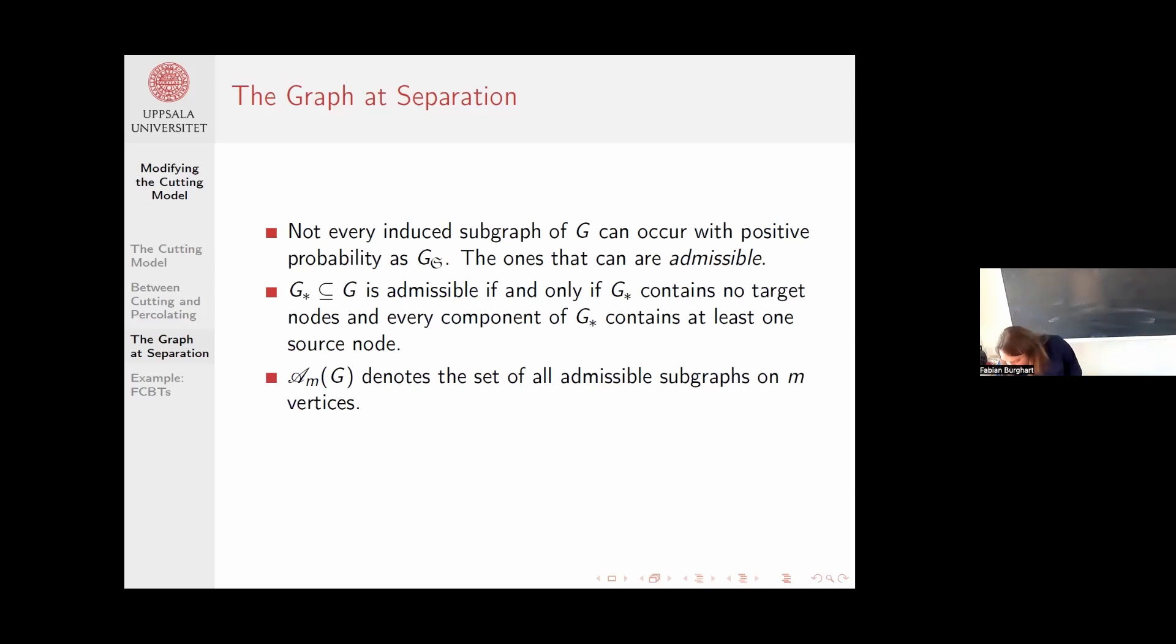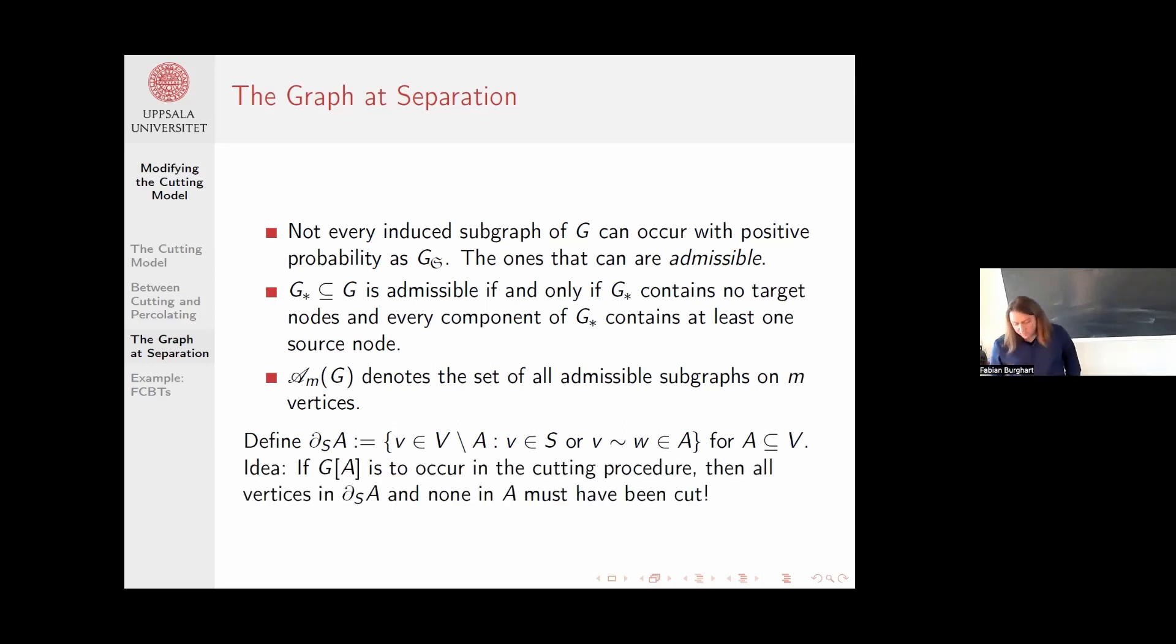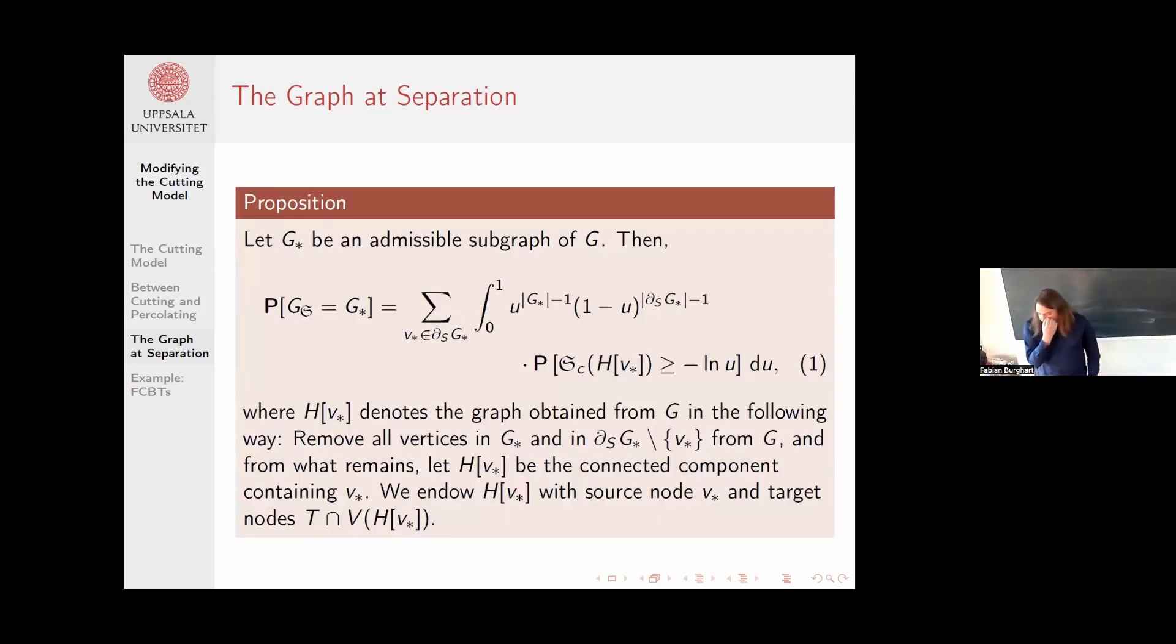I use this curly M to denote the set of all such subgraphs. A bit more notation: I have this partial SA. What I'm doing here is I'm saying these are all vertices that are not in some subset A, but they either belong to S or they are adjacent to a vertex in A. The point is, if I want to see the graph induced by vertex set A at some point, then I know that first none of the vertices in A can have been cut yet, but also all of the vertices in delta must have been cut, otherwise they would still be there.